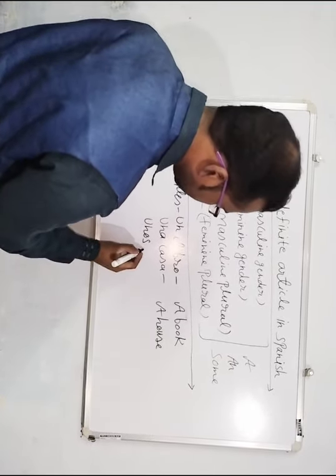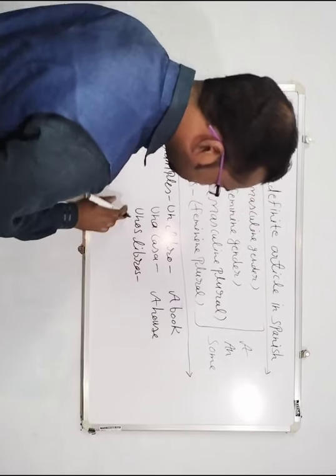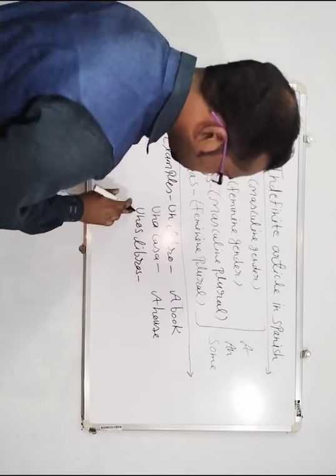Unos libros. Some books. This is plural — already I have explained to you that Unos will be used with masculine plural. So unos libros means 'some books' in English.